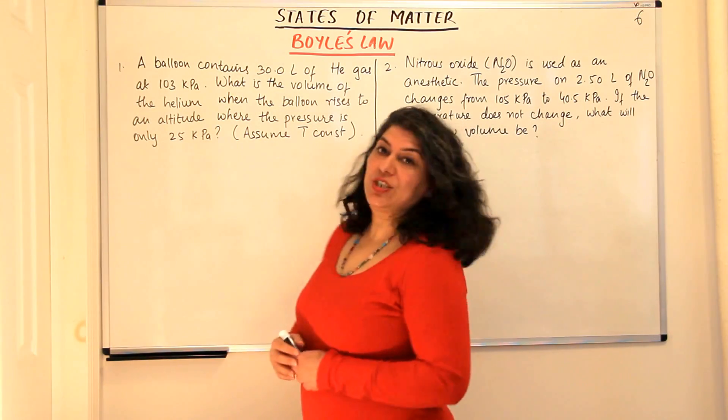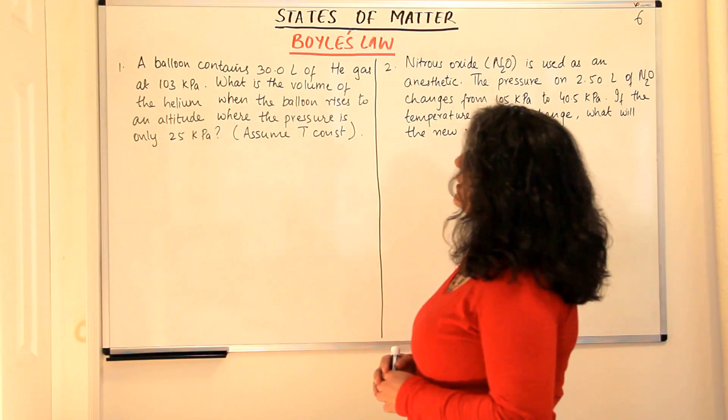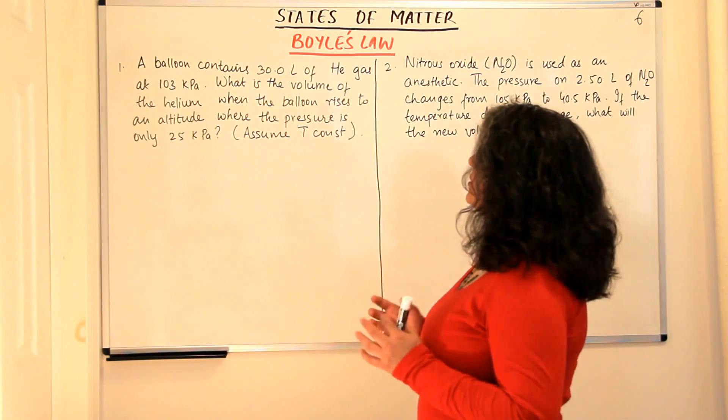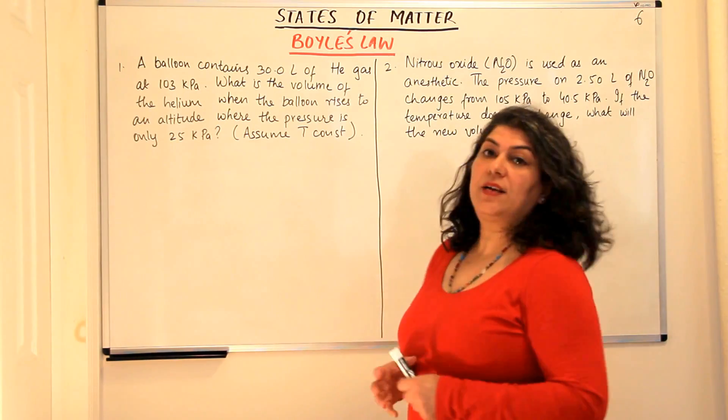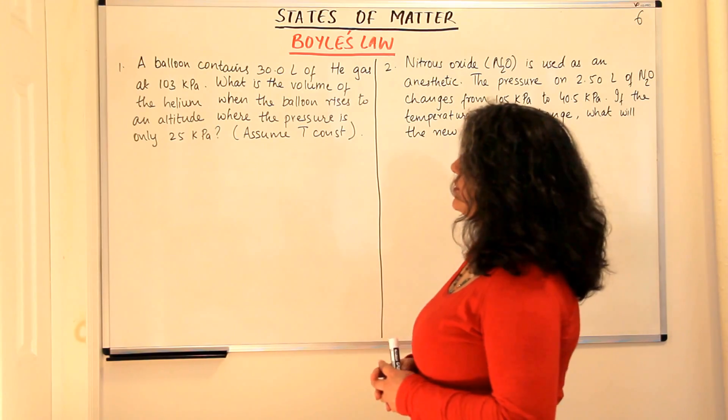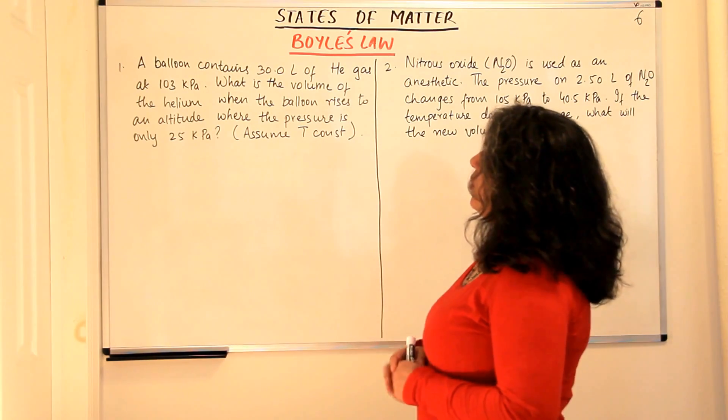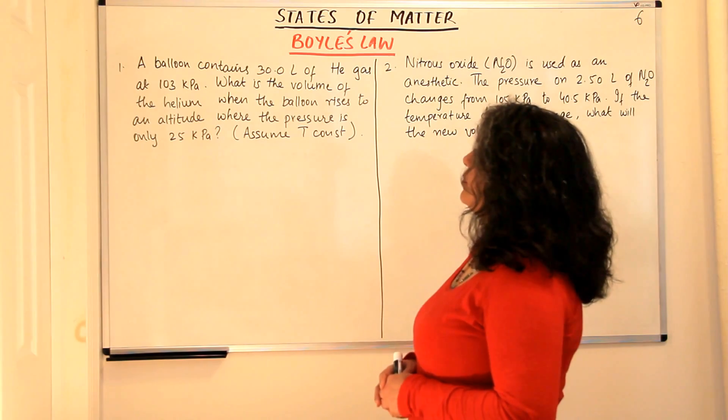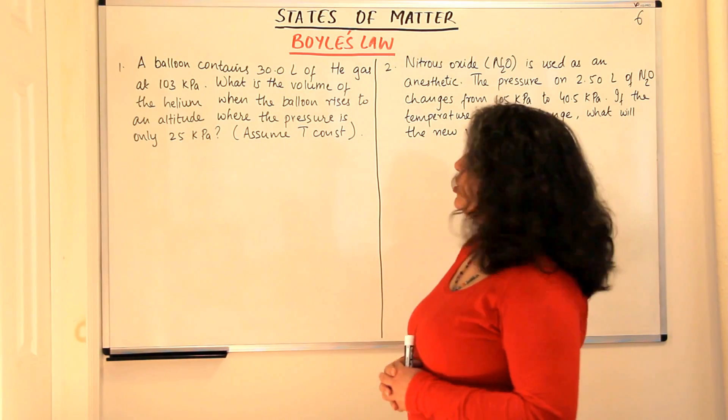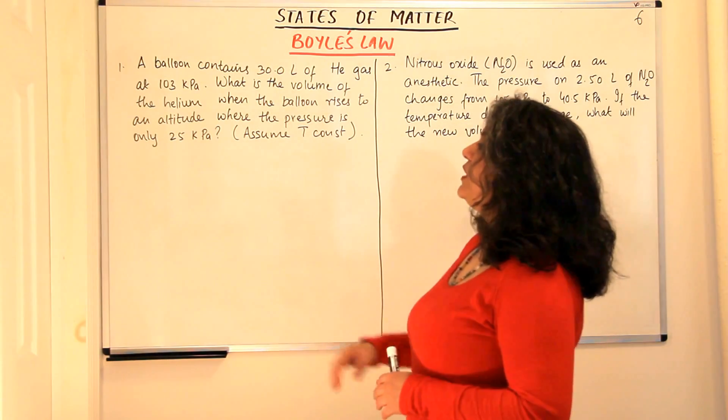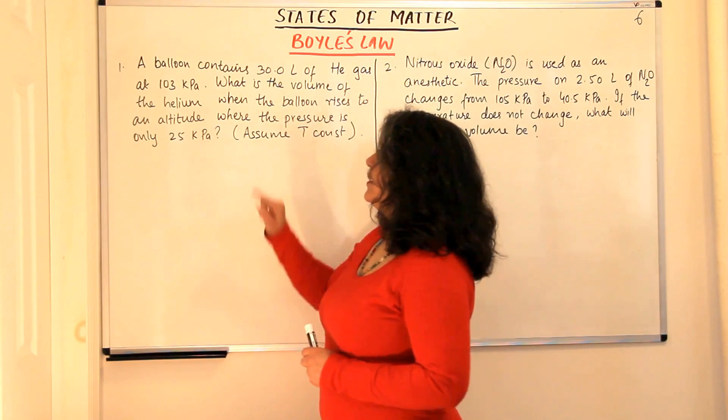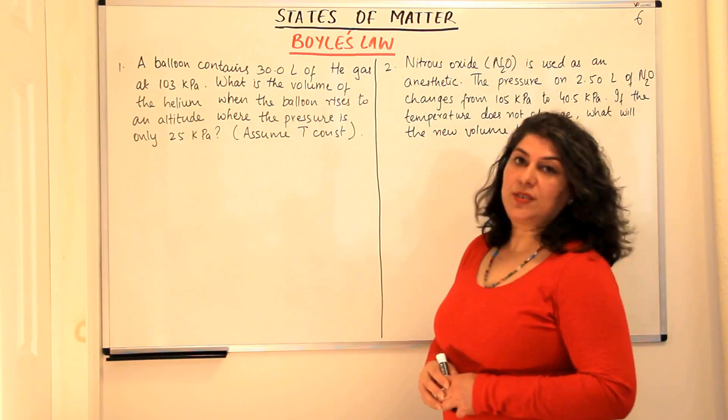The first question is that a balloon contains 30 litres of helium gas at 103 kilopascals. What is the volume of the helium when the balloon rises to an altitude where the pressure is only 25 kilopascals? You have to assume that temperature is constant.